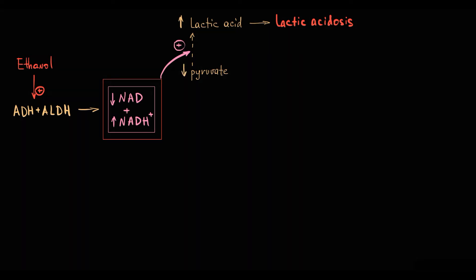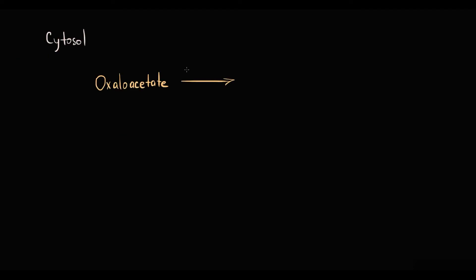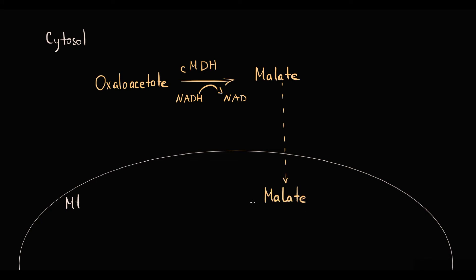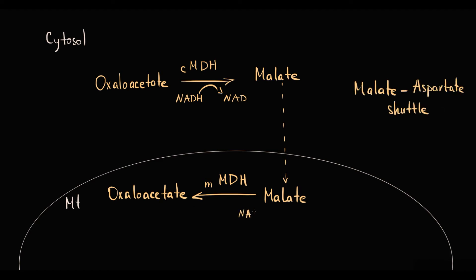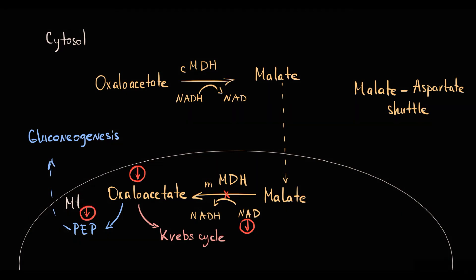The elevated NADH/NAD+ ratio also decreases oxaloacetate, thereby further inhibiting gluconeogenesis. In the cytosol, oxaloacetate is reduced by cytosolic malate dehydrogenase (using NADH) to malate, and in the mitochondria, malate is oxidized by mitochondrial malate dehydrogenase (using NAD+) back to oxaloacetate — as part of the malate-aspartate shuttle. Importantly, oxaloacetate is both a Krebs cycle intermediate and a gluconeogenic substrate; by conversion to phosphoenolpyruvate it can be directly used in gluconeogenesis. When NAD+ decreases, oxaloacetate formation decreases, reducing another gluconeogenic substrate and thereby decreasing gluconeogenesis.